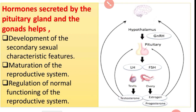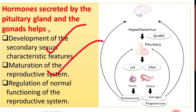Hormones secreted by the pituitary gland and the gonads help in: development of the secondary sexual characters, maturation of the reproductive system, and regulation of the normal functioning of the reproductive system.